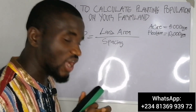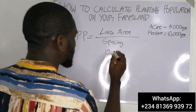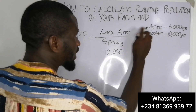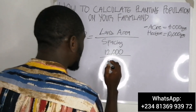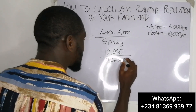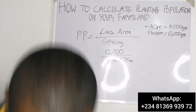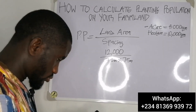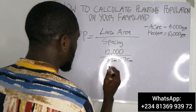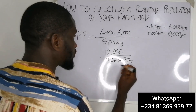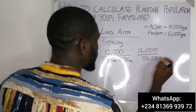Let's go with coconut as our first example. Assuming you have three acres of land — three acres gives us 12,000 square meters. The spacing for coconut is 7.5 meters by 7.5 meters. So we multiply 7.5 by 7.5, which gives us 56.25. That means we calculate 12,000 divided by 56.25.